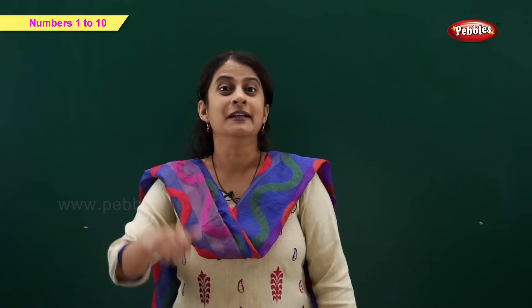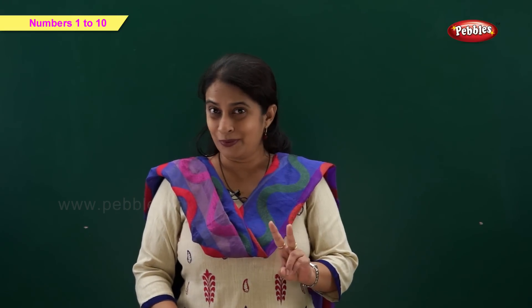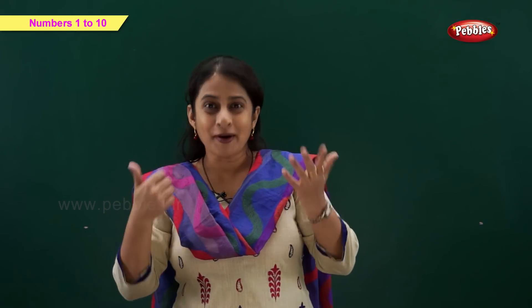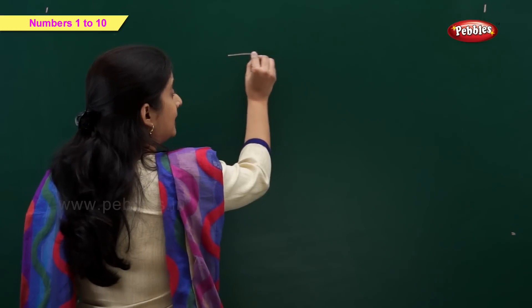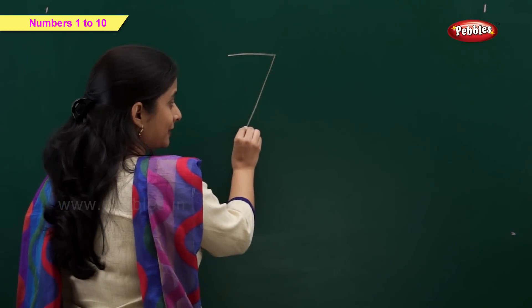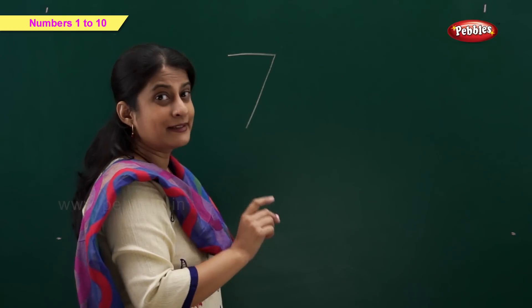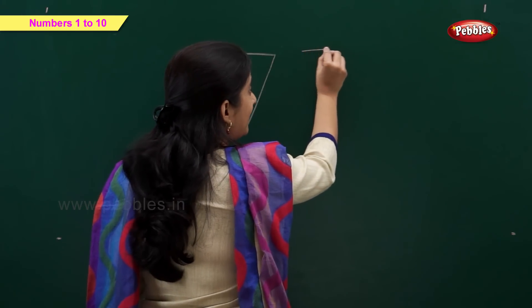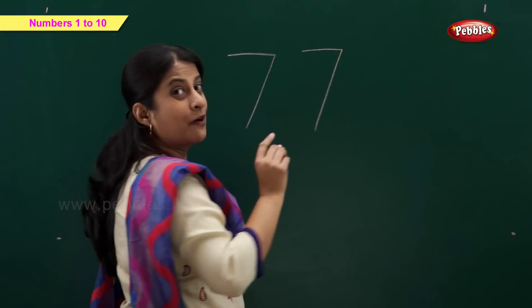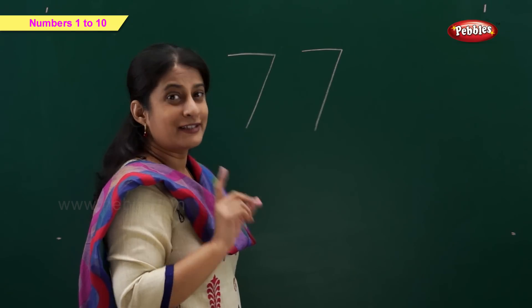So friends, up till now we have learned numbers 1, 2, 3, 4, 5 and 6. So what comes after 6? Number 7. Let's see how to write number 7. A sleeping line and a slanting line, or cross line, makes number 7.